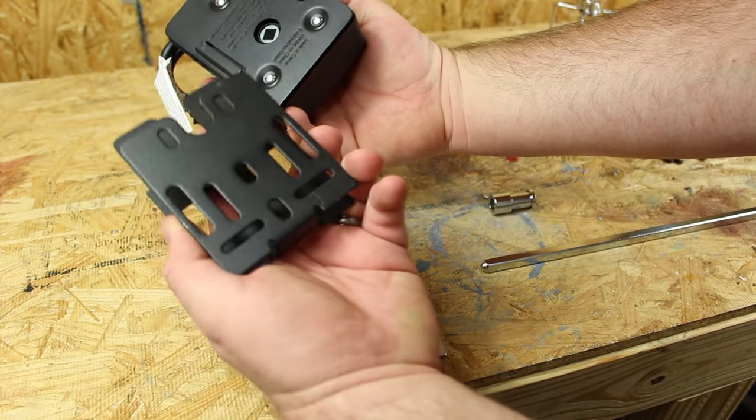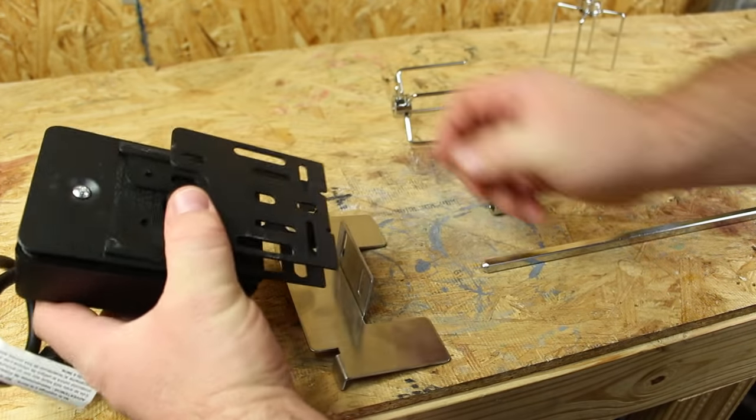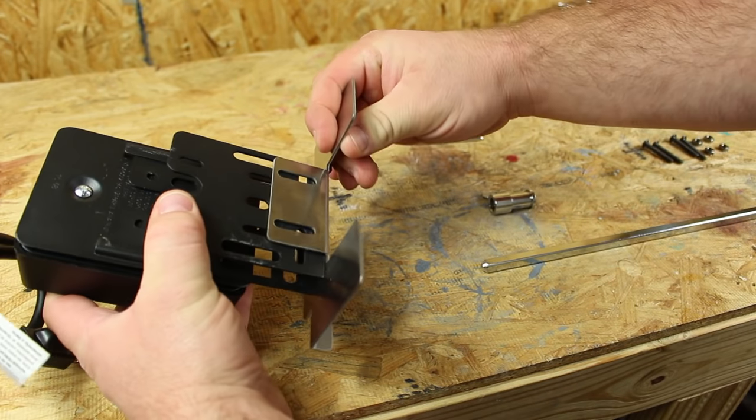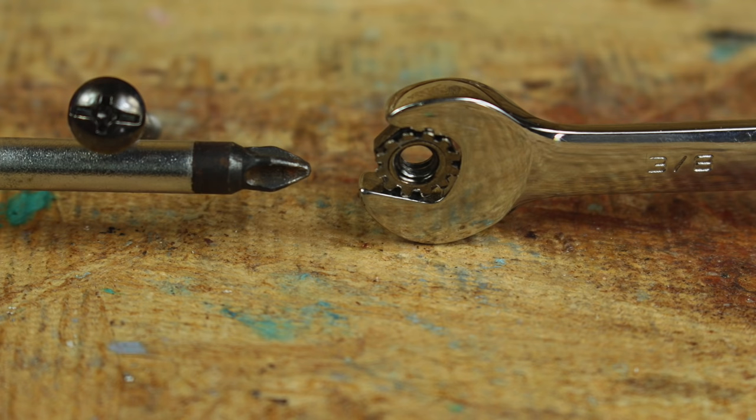To get started, we slid the rotisserie motor into the mount and test-fitted the mount to the base. We're using two of the four screws supplied with the kit. These screws have a fillister head and a 3/8's nut.